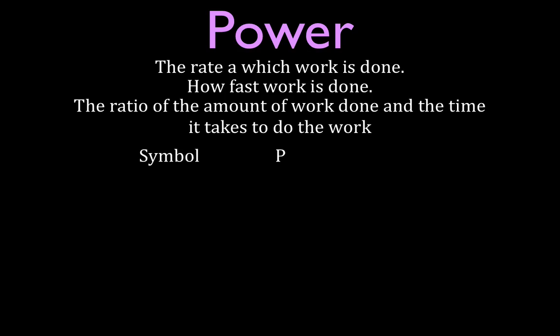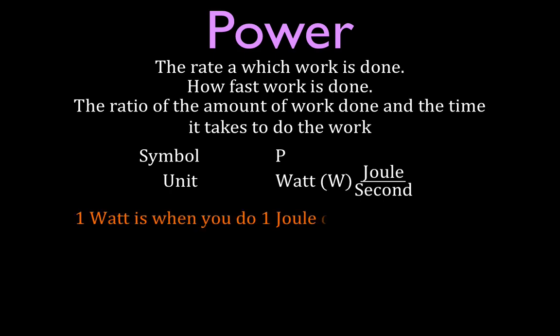The symbol for power is P. The unit is the watt, which we abbreviate capital W, James Watt. What is a watt? It is a joule per second. If you do one joule of work in one second, you have a power output of one watt. One watt is when you do one joule of work in one second.